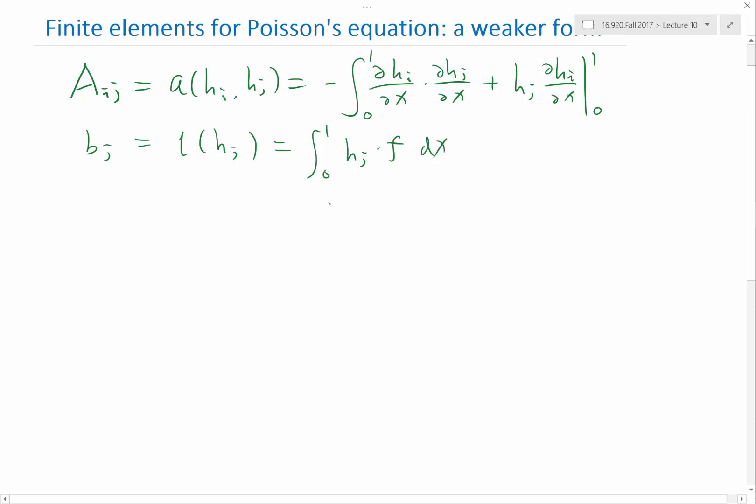And now let's plug in the form of hi and hj to see what they are. So first, let's look at the first term. This is x, this is hi. And we remember our basis functions are like this. So this is xi, xi minus 1, xi plus 1.